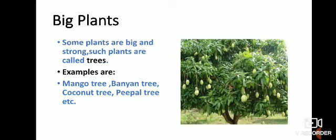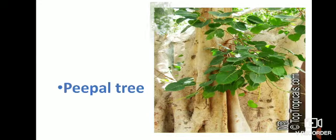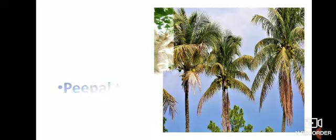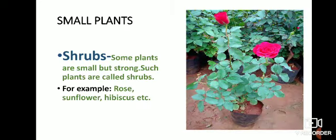Types of plants. Plants are of different types. Big plants: some plants are big and strong. Such plants are called trees. Examples are, as you can see in the given picture: mango tree, banyan tree, peepal tree, and coconut tree. As you saw, all the stems are thick and strong.